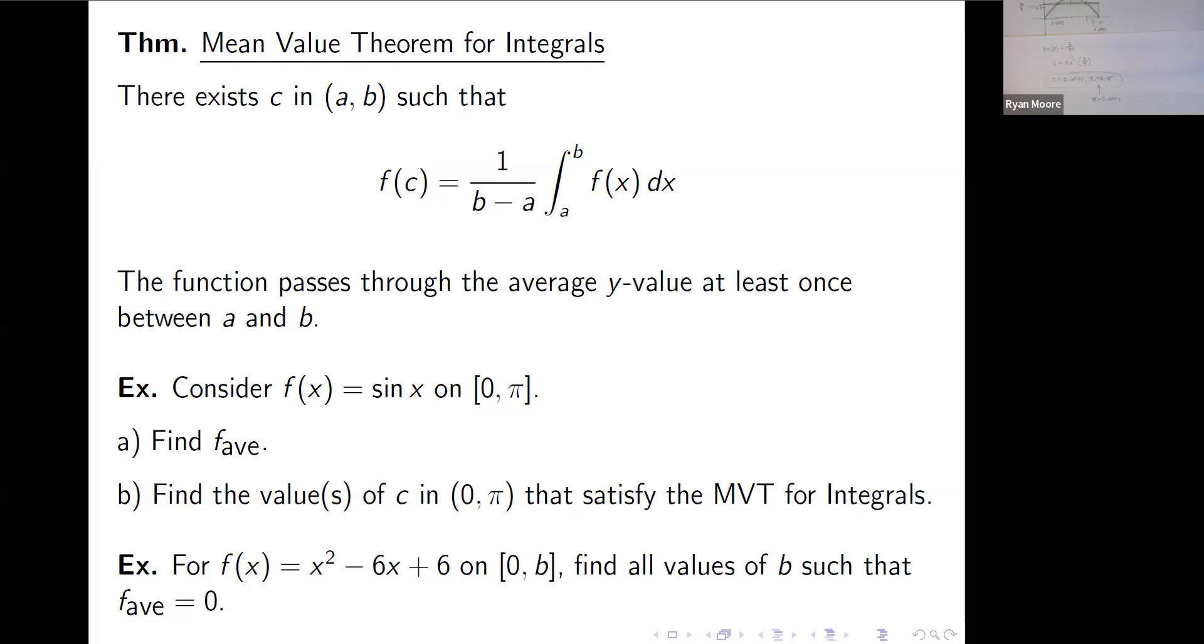Okay, there is one more example. Let's do it. A little bit different. This one's kind of challenging. But it's fun. It's worth it. For f of x equals x squared minus 6x plus 6 on the interval from 0 to b, find all values of b such that f average equals 0. So what must be the second, the upper limit of our integral or the upper limit of the interval to where the average would work out to be exactly 0? Let's take a look at the graph.